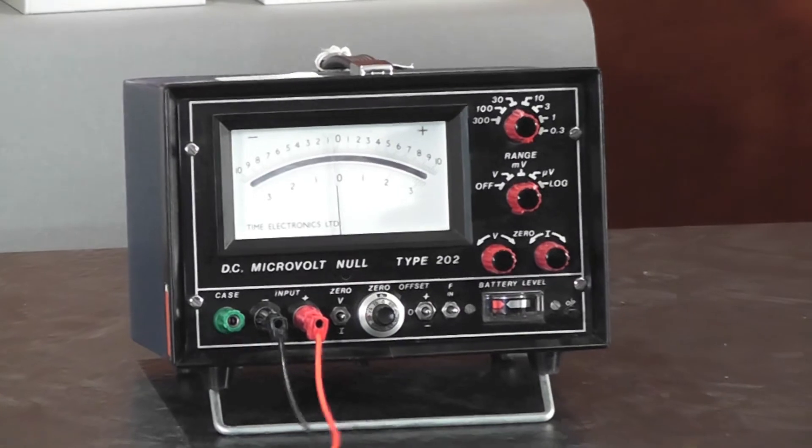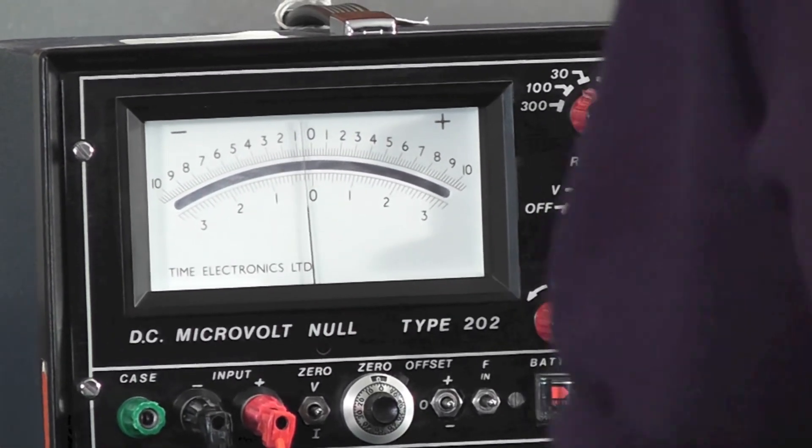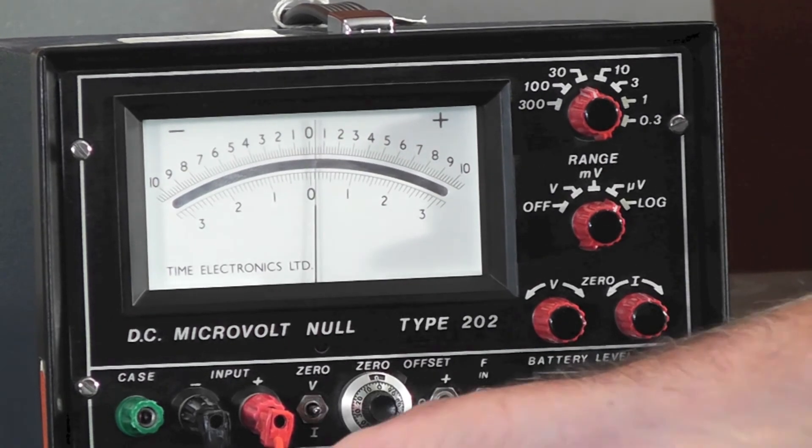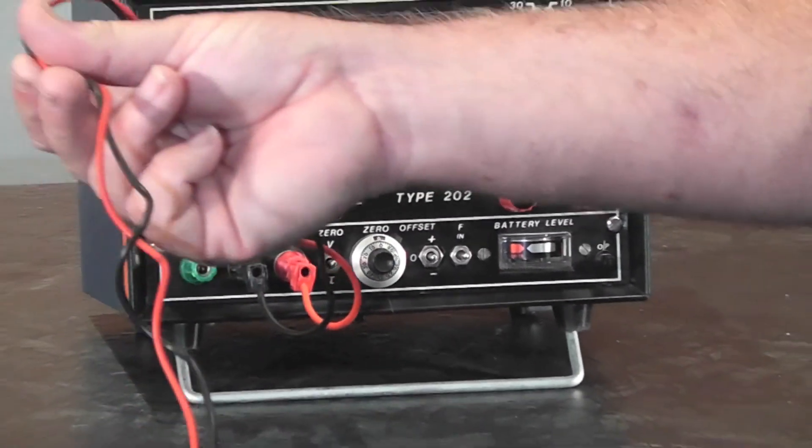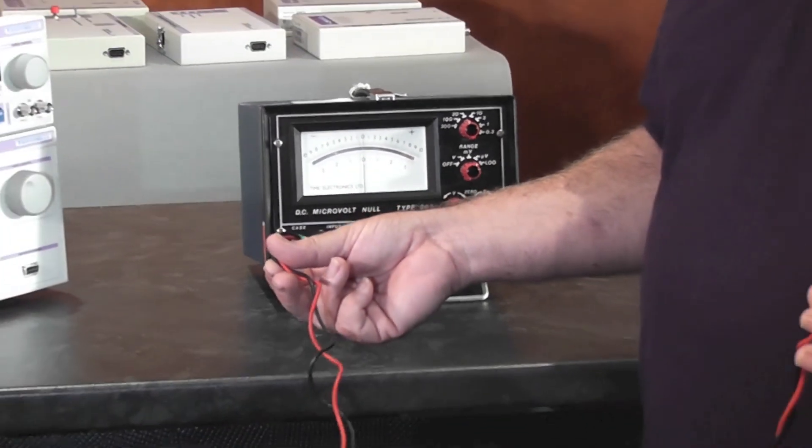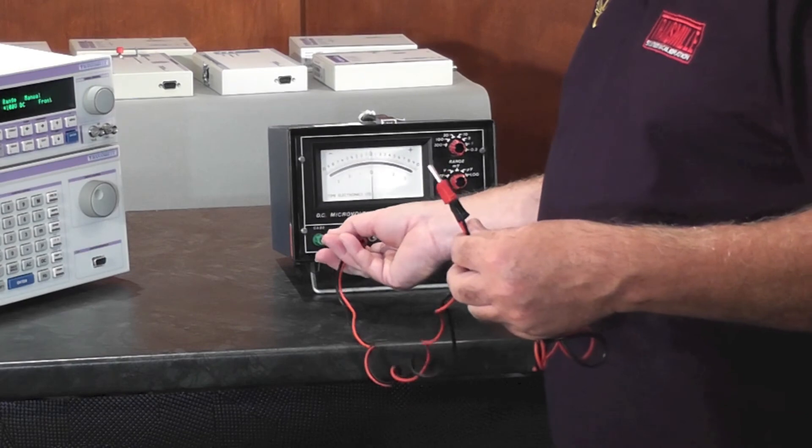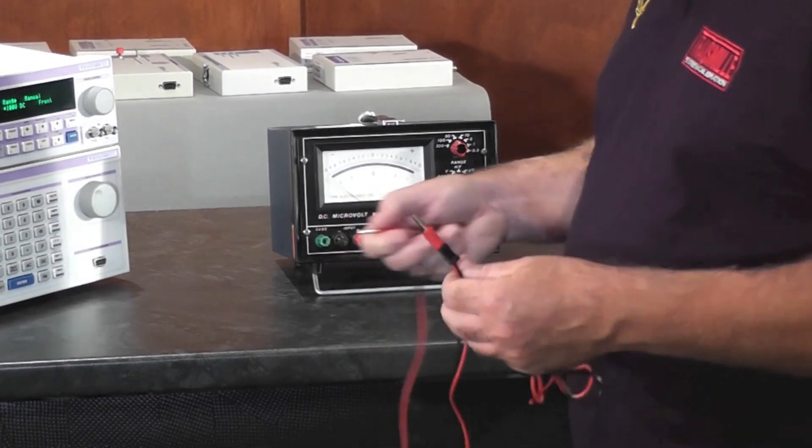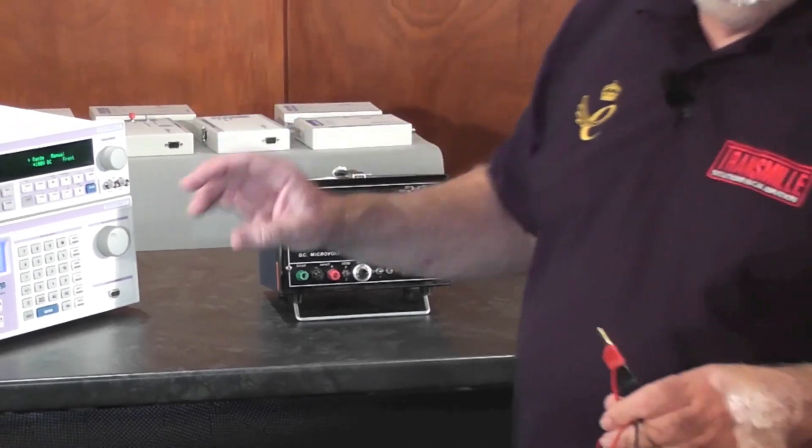So it's always worthwhile if you can to have as short a lead as possible and have them twisted together if it's not going to give you insulation problems, and keep them away from mains line noise. All of these things will introduce additional noise over and above what's going to be in the measurement anyway.